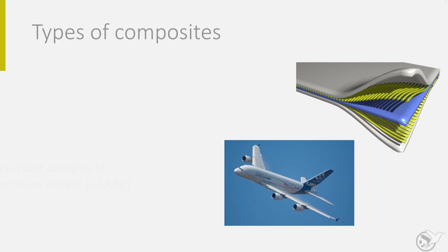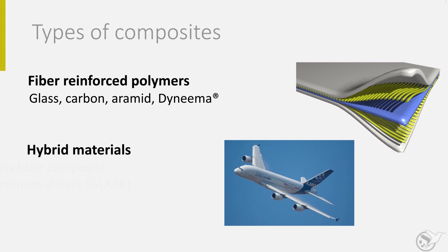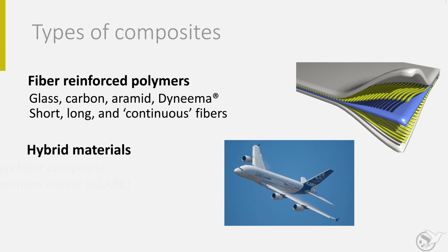There are two classes of composites: fiber reinforced polymers and hybrid materials. Fiber reinforced polymers are polymers in which fibers are embedded in a matrix. The fibers are responsible for strength and stiffness. The polymer, or matrix, is responsible for the coherence, the load transfer between fibers, and for environmental protection. For the fibers, we can choose many different materials. Carbon, glass, and aramid fibers are often selected for aerospace applications. Other options might be metal fibers, polymer fibers like Dyneema, natural fibers like flax, and a lot more. Fibers can be purchased as short, long, and continuous fibers, and this fiber length has an important influence on the processing of composites.